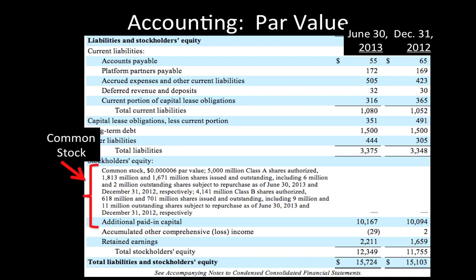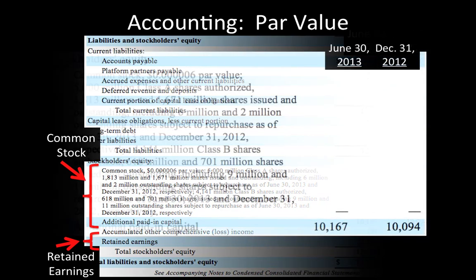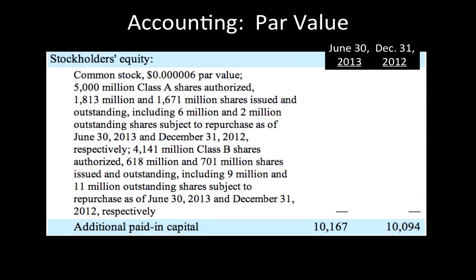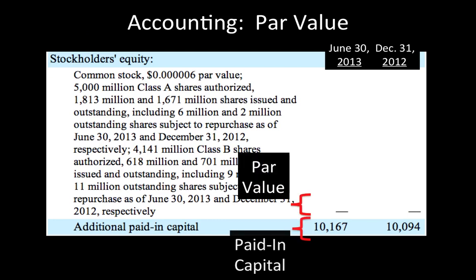This section shows the company's common stock, and this line shows its retained earnings. We are interested in how the common stock is presented. Note that instead of a single entry for common stock, there are entries for par value common stock and additional paid-in capital.